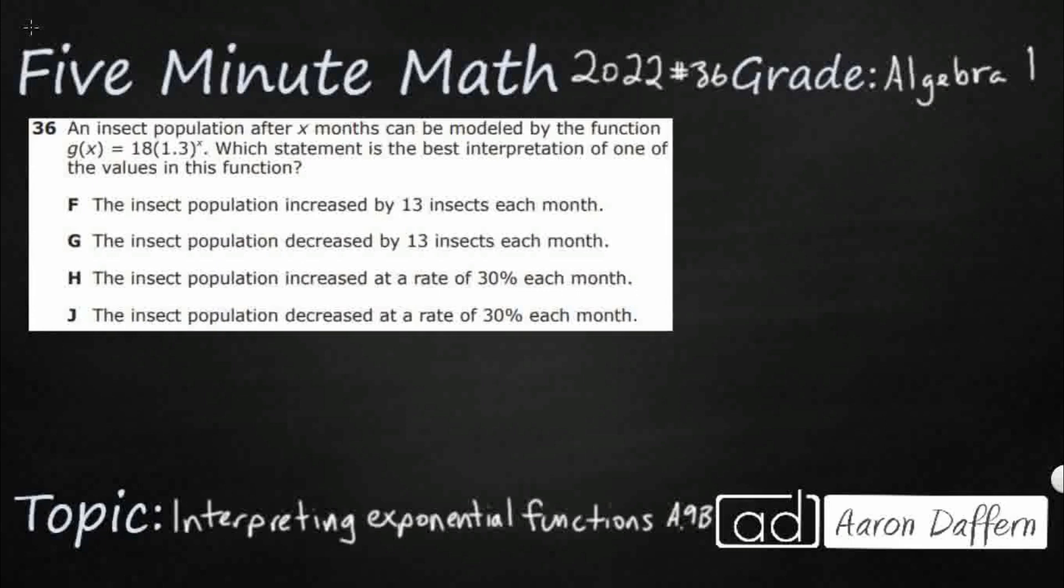So we have an insect population and its population can be modeled using that particular exponential function. So how do we interpret that? Exponential functions take this form right here: y equals a times b to the x power, and that's what we see here.